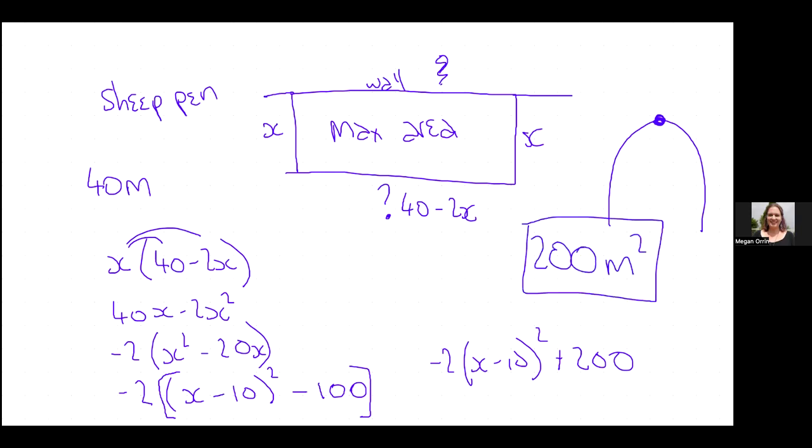So what does the maximum area equal then? That's what this is because the turning point is 10, 200, right? This is 10, 200. So 10 is going to be what X is. So this is 10 meters. This is 10 meters. And this is 40 minus 20. So that's 20 meters. And look, that equals 200. 20 times 10 is 200. So 200 meters squared is my maximum area of my sheep pen. Are you with me?